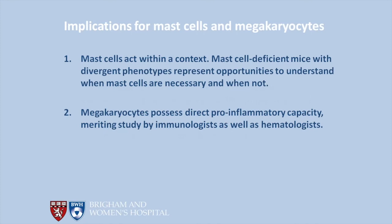Despite these caveats, our findings have important implications for both mast cell and megakaryocyte fields. First, they illustrate how mast cells act within a complex hematopoietic and non-hematopoietic environment. Strains of mast cell-deficient mice with contrasting phenotypes are not problems for the mast cell field, but rather opportunities to develop a more nuanced understanding of when mast cells are necessary and when they are not. Second, while platelets are well recognized as immune actors, our findings now establish that megakaryocytes also possess previously unappreciated direct pro-inflammatory capacity. We believe that megakaryocytes therefore merit a dedicated study as immune cells in their own right.